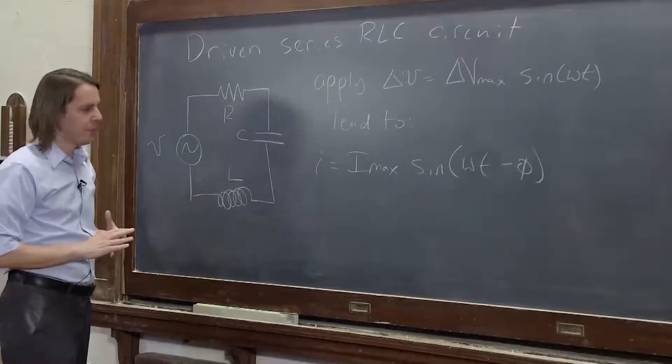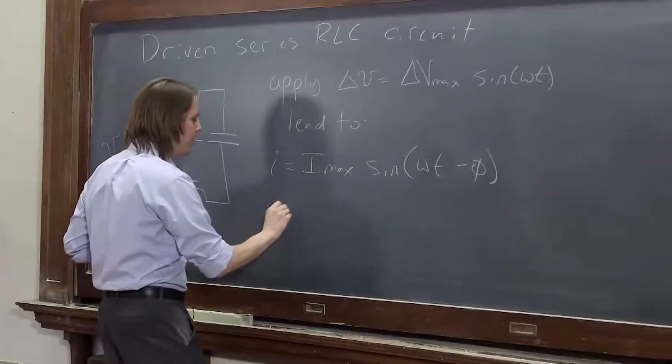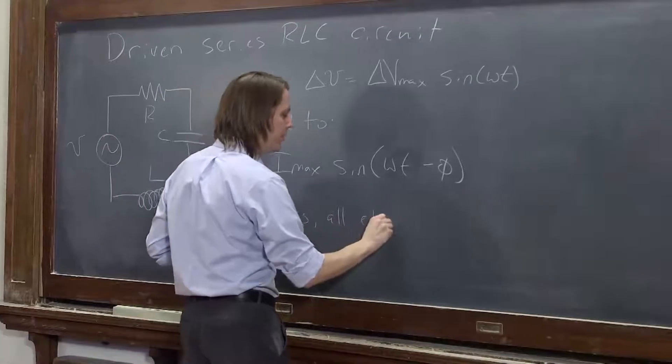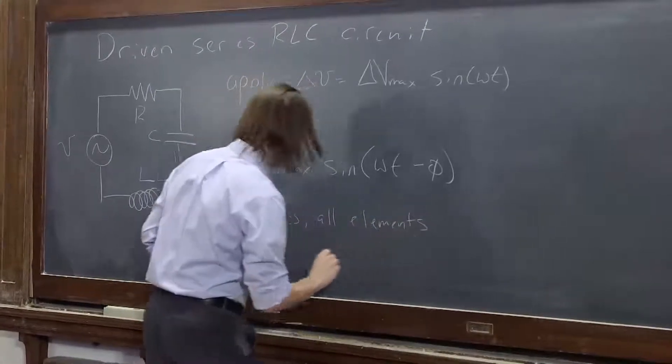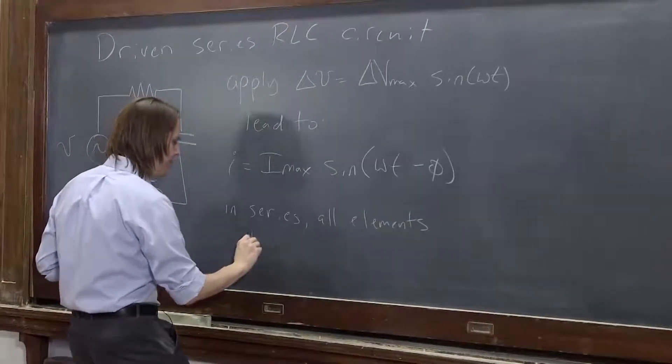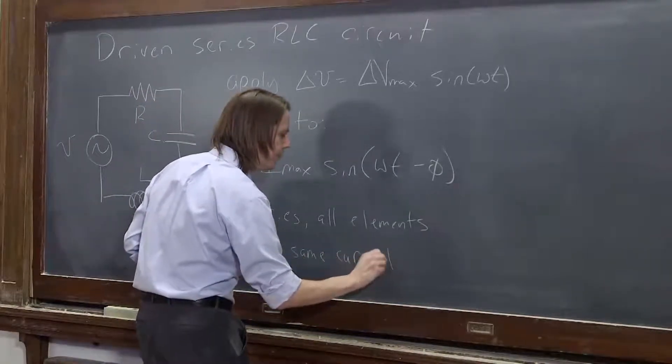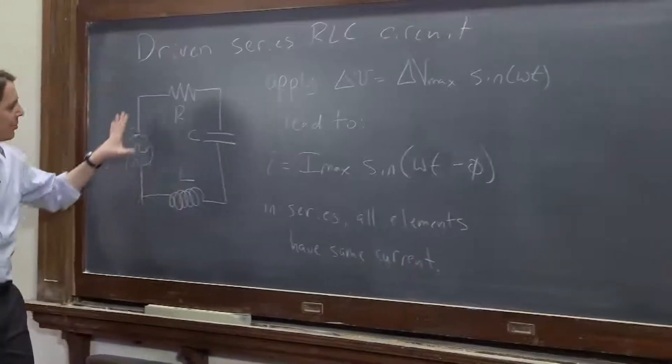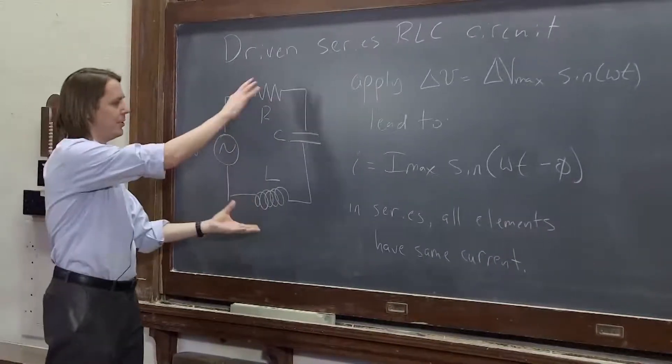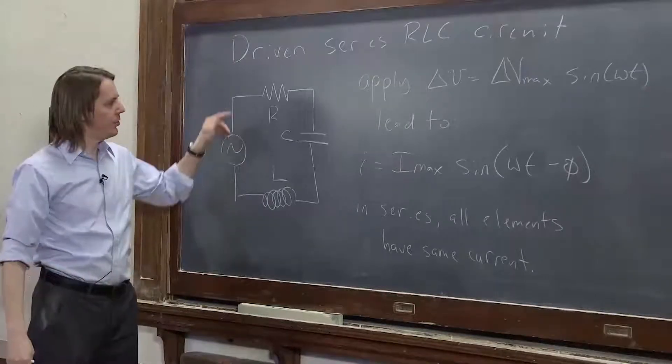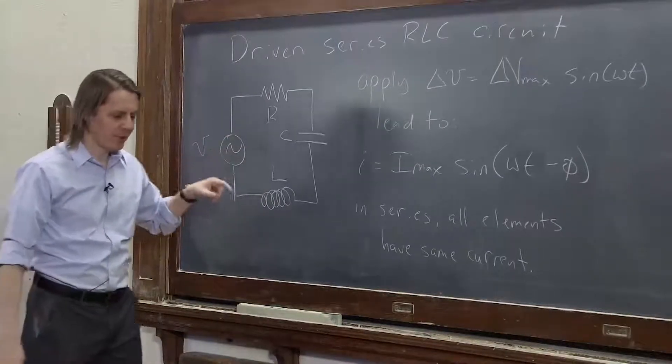And since they're in series, all elements have the same current at some point in time. If you go make other more complicated RLC circuits where you put maybe two of them in parallel next to one in series, then that changes the answer. Here, we're just doing it for when they all have the same current.